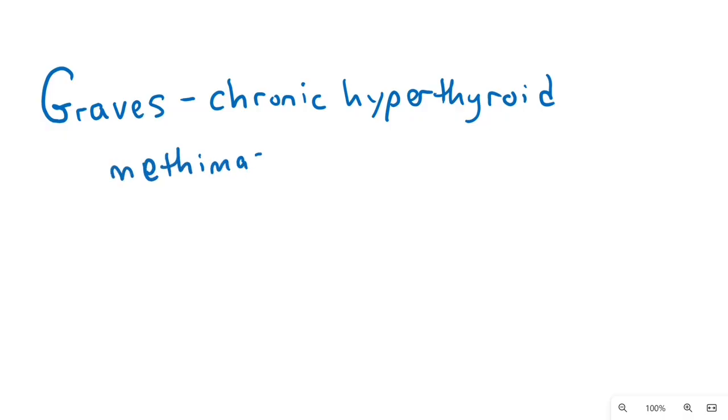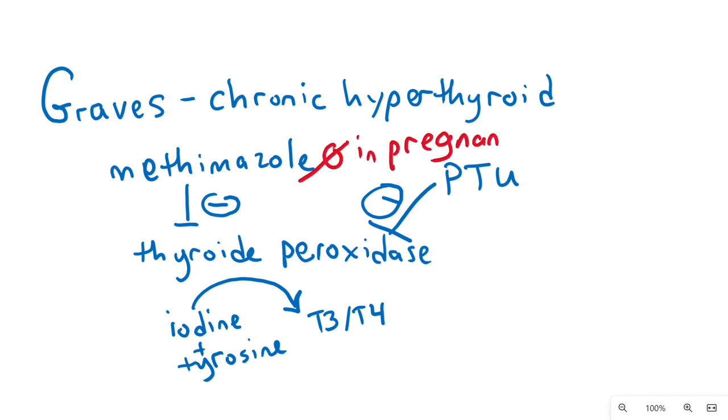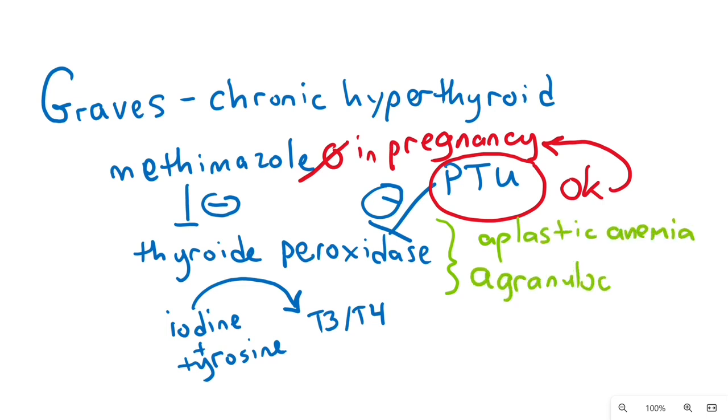Chronic hyperthyroidism from Graves' disease can be treated with medications such as methimazole that inhibits thyroid peroxidase enzyme in the thyroid, so there is no iodine tyrosine coupling, and PTU, a thioamide that also inhibits peroxidases. Do not use methimazole in pregnancy. It is okay to use PTU in pregnancy. PTU and methimazole can cause aplastic anemia and agranulocytosis.